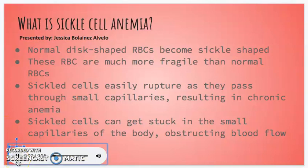What is sickle cell anemia? Normal disc-shaped red blood cells become sickle-shaped. These red blood cells are much more fragile than other red blood cells. Sickled cells easily rupture as they pass through small capillaries, resulting in chronic anemia.